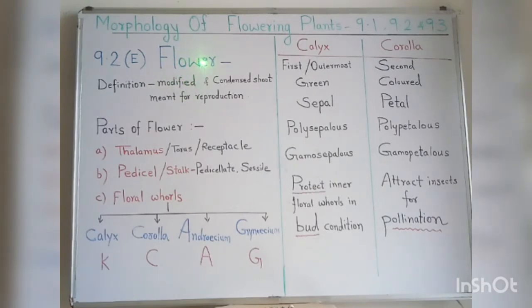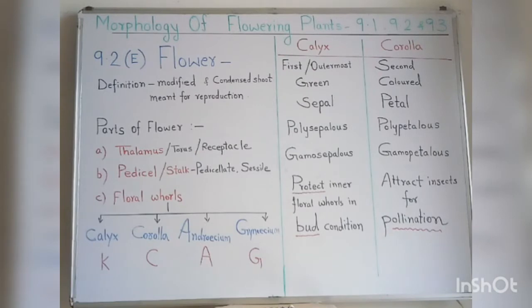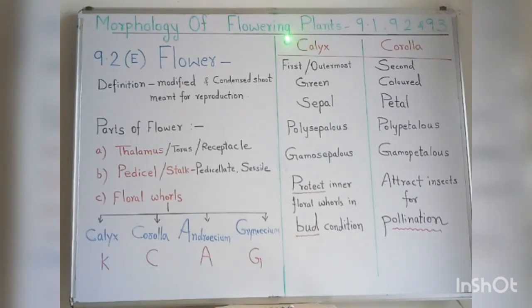Before starting, let's have a short introduction. The word morphology means it is the branch of biology which deals with the study of external characters of an organism. Flowering plants are the plants which produce flowers.